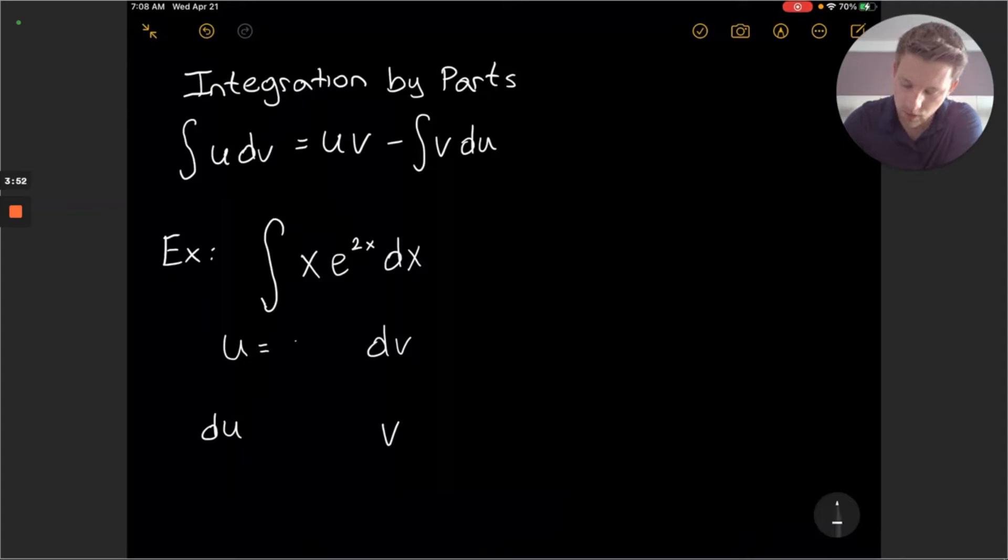So I'm going to choose x here for my u and then the dv would become e to the 2x dx. So we can consider our u dv make up the entire integral that we start with here.